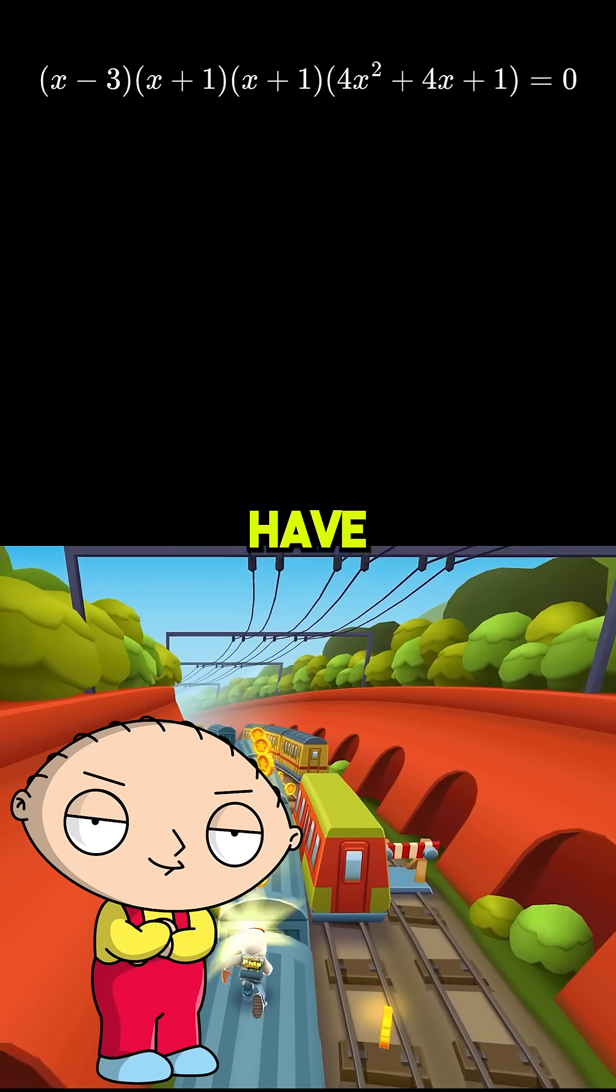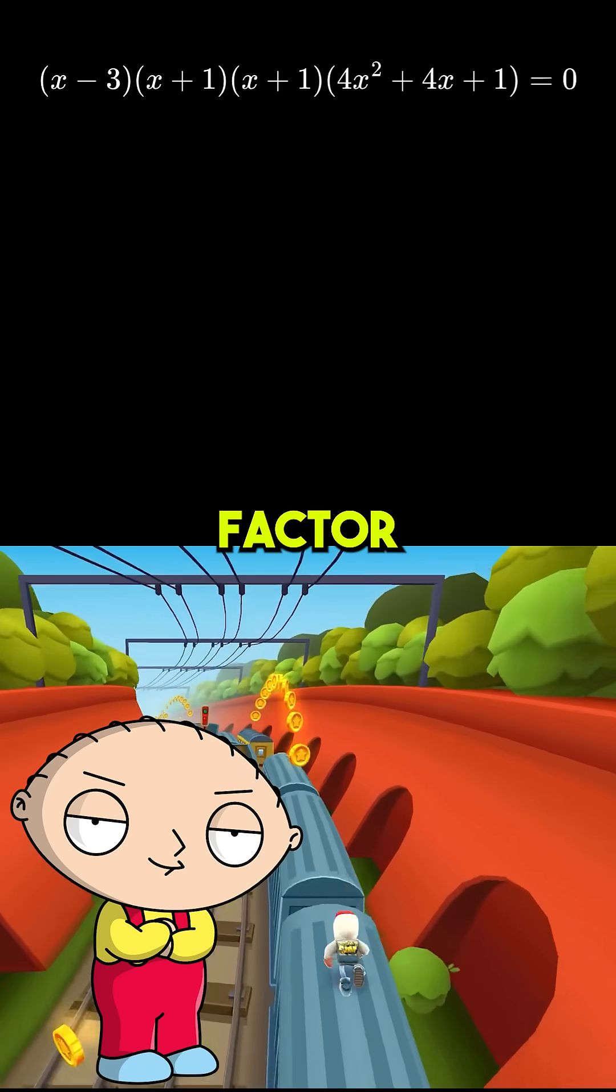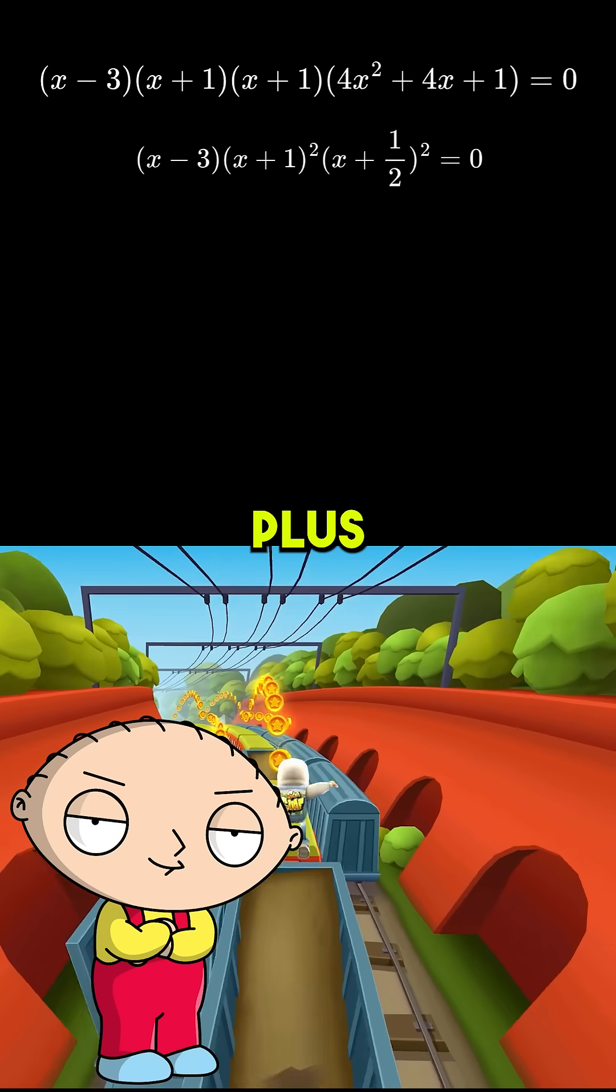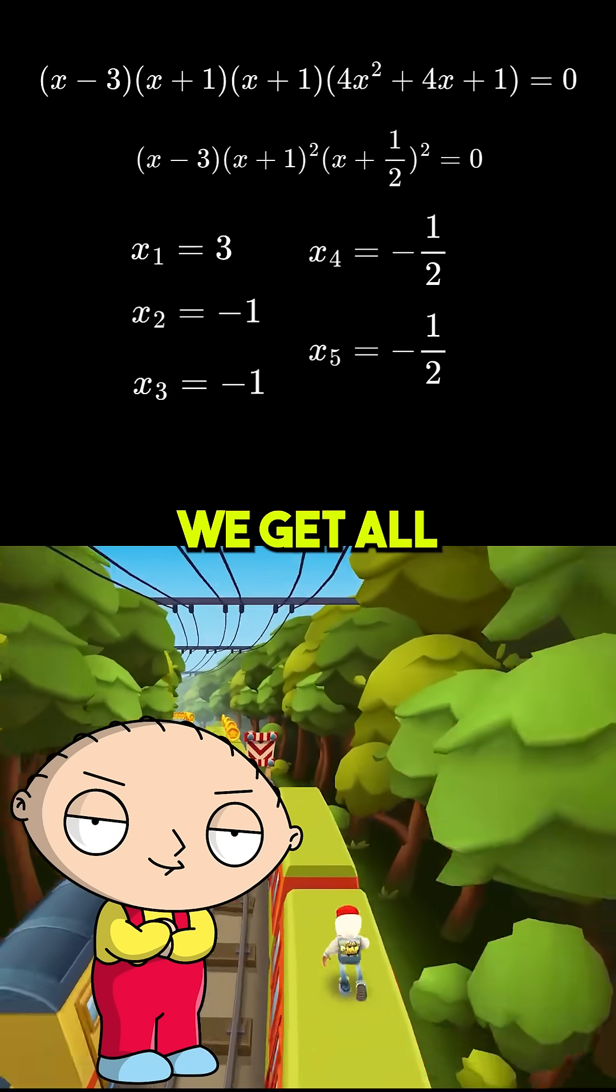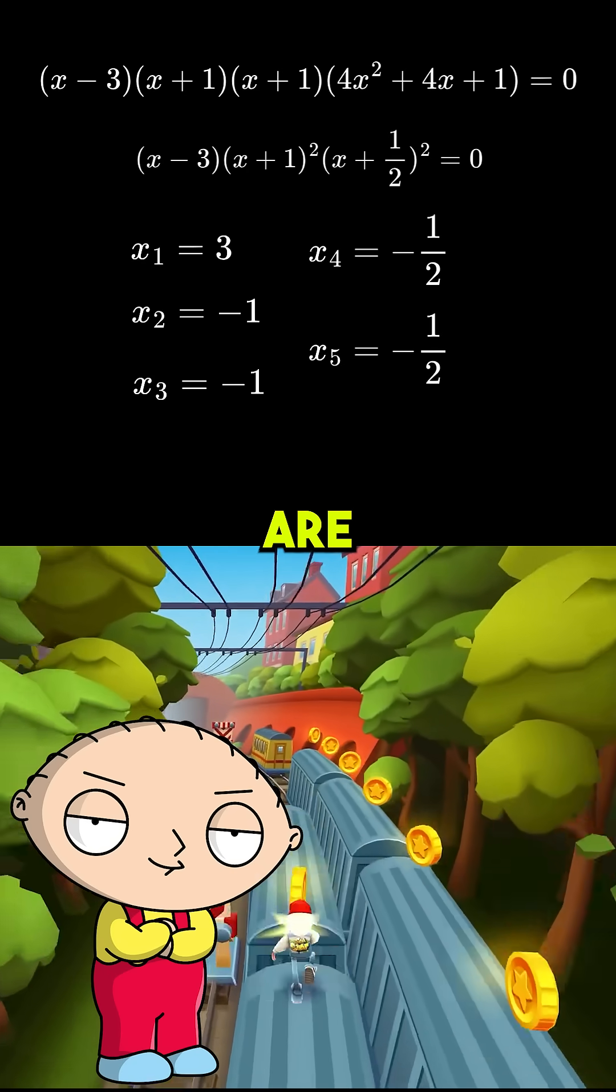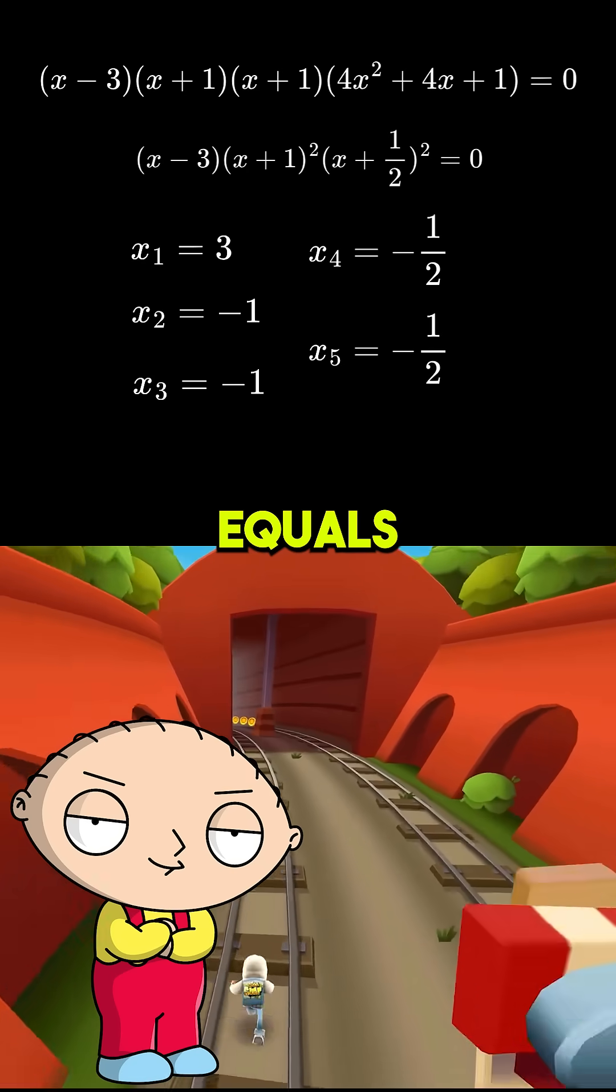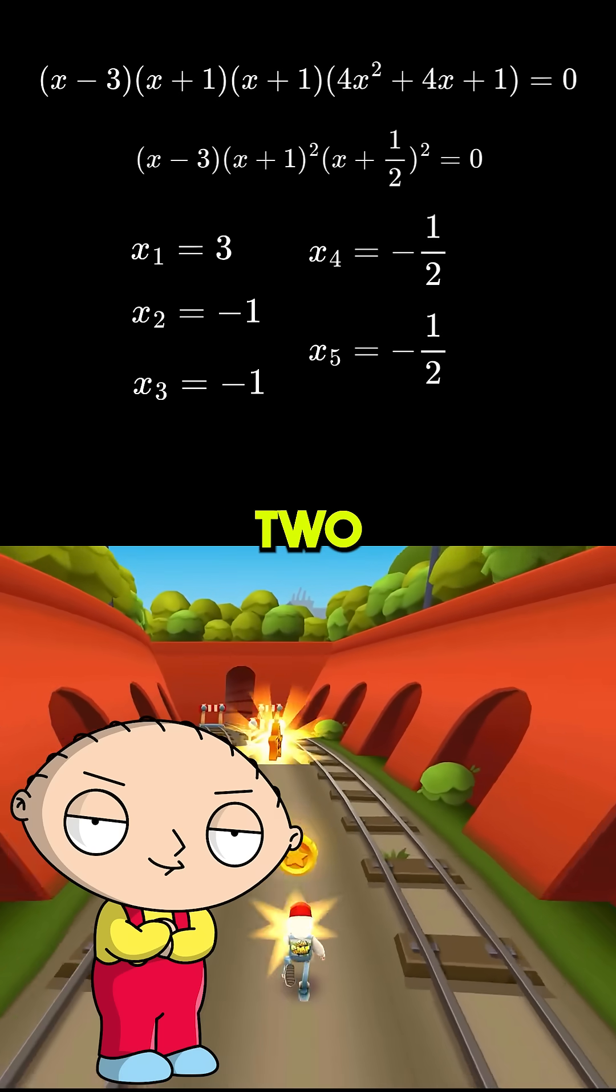So now, we just have to solve this quadratic function, which is easy. We can just factor it, and as you can see, it becomes x plus 1 half raised to the power of 2. Now, we just solve for x, and we get all our roots for the equation. So the final roots of this equation are x equals 3, x equals negative 1 with multiplicity 2, and x equals negative 1 half with multiplicity 2.